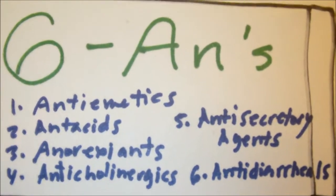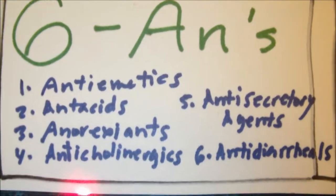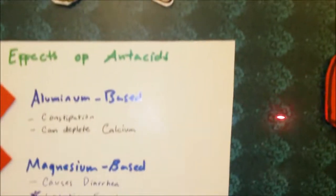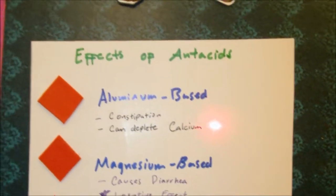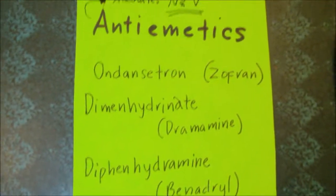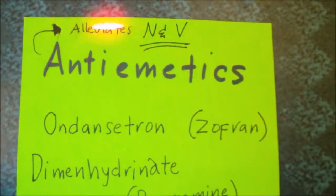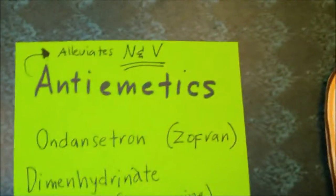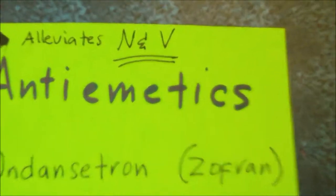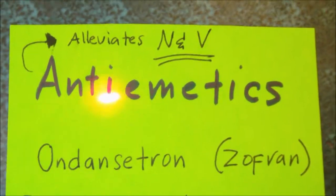Anti-emetics are used to help alleviate nausea and vomiting. Going deeper into the physiology, an anti-emetic basically diminishes the sensitivity of what we call the chemoreceptor trigger zone, which when it becomes irritated causes us to vomit.